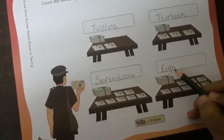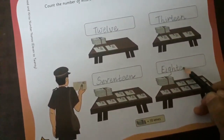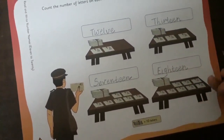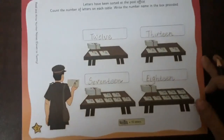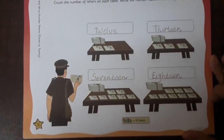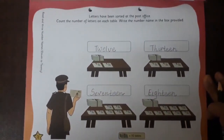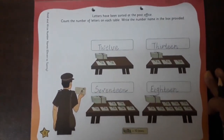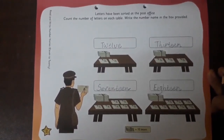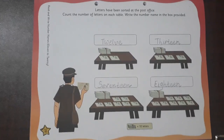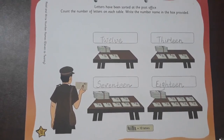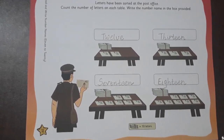I hope, children, by now you can write number names 1 to 20 on your own independently. So this way we are going to do page number 29. Keep practicing! We will meet in the next video. Till then, bye bye!